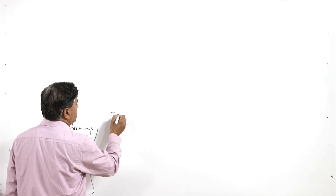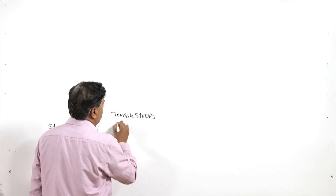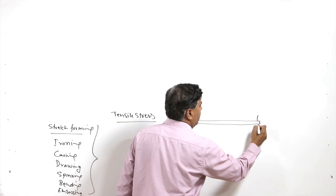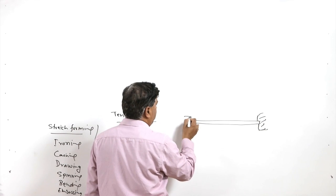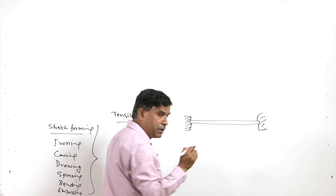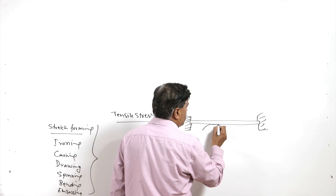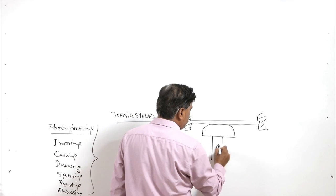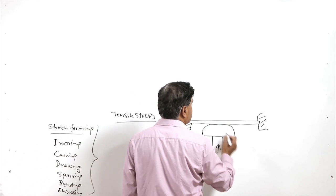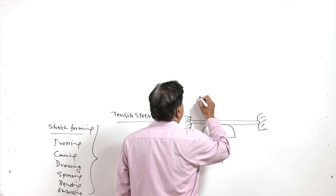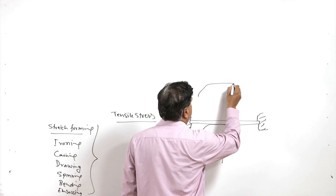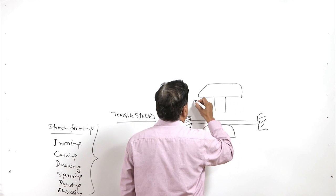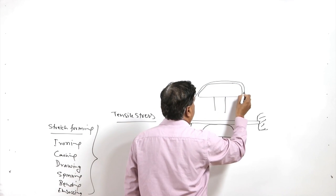Stretch forming basically involves tensile stresses, wherein one strip like this is taken and it is held firmly at the ends, and then a suitable form block is used. This form block is pushed through the sheet metal, so the sheet metal is stretched. Basically when the sheet metal is stretched it follows the shape of the form block, and after stretching, the sheet metal takes the shape of the form block.